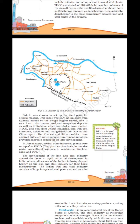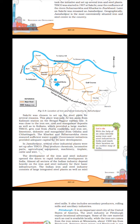Sakchi was chosen to set up the steel plant for several reasons. It was only 32 kilometres away from Kalimati station on the Bengal-Nagpur Railway line. It was close to iron ore, coal and manganese deposits as well as to Kolkata, which provided a large market. TISCO gets coal from Jharia coal fields and iron ore, limestone, dolomite and manganese from Odisha and Chhattisgarh. The Karkhai and Subarnarekha rivers ensured sufficient water supply; government initiatives provided adequate capital for its later development.